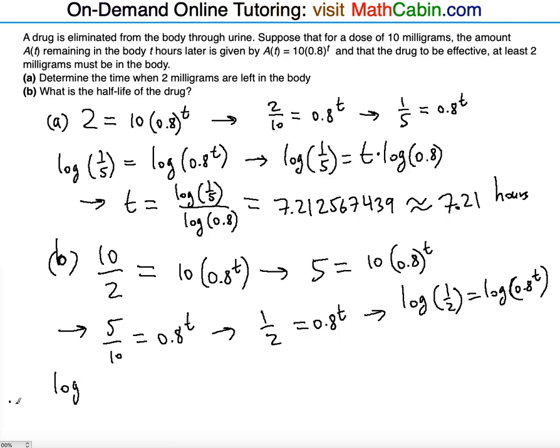So log of 1/2 is equal to T times log of 0.8. And then you can isolate the T by dividing both sides by log of 0.8. So log of 1/2 divided by log of 0.8.